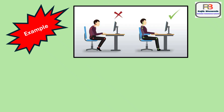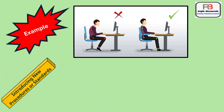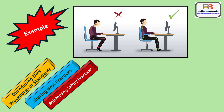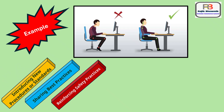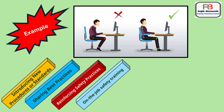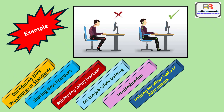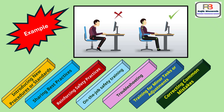Now let us understand OPL with some examples. In this picture we can see right and wrong sitting posture. There can be a few more examples like introducing new procedures or standards, sharing best practices, reinforcing safety practices, on-the-job safety training, troubleshooting or resolving problems, training for minor tasks or adjustments, and correcting common mistakes.